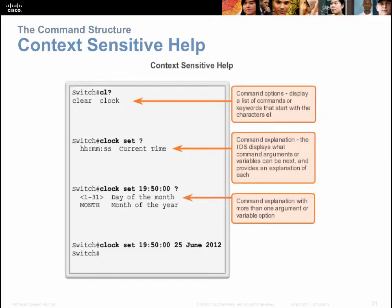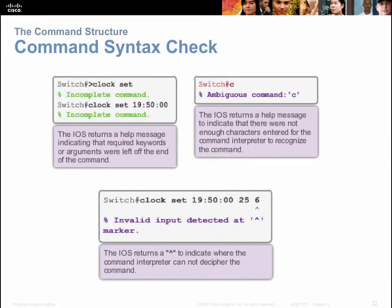Eventually the CLI will tell you to press return. If you type 'clock set' and hit enter without providing enough information, the CLI will tell you the command was incomplete — it didn't receive enough keywords or information to execute. So if you hit enter too early, it will just say you've provided an incomplete command, and you'd retype it using the question mark at the end to find out what you're missing.